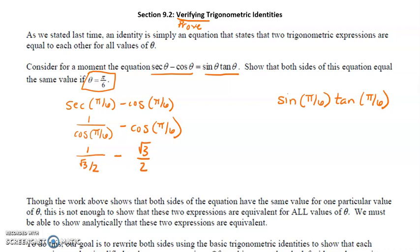From here it's algebra and fraction work to simplify down to something recognizable — our goal is to check whether these two sides are equal. On the left-hand side, instead of dividing by a fraction, we multiply by the reciprocal, giving us 2 over √3. We're subtracting √3/2, so we need a common denominator. We multiply the first fraction by 2 on top and bottom, and multiply the second fraction by √3 on top and bottom.